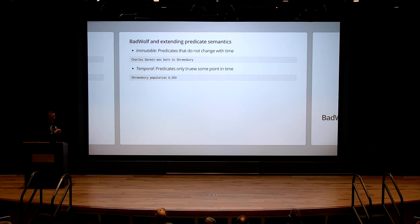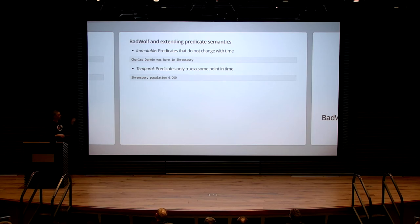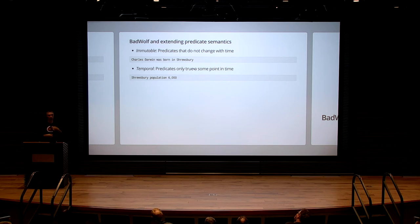So in Bad Wolf we define two kinds of predicates. First, predicates that are immutable — representing statements that don't change and are always true, like Charles Darwin's birthplace. Second, temporal predicates — like Shrewsbury's population of 6,000 — which we know changes over time: somebody is born tomorrow, somebody passes away, so the population fluctuates. It's important to know when that value was true.